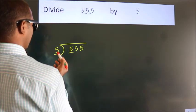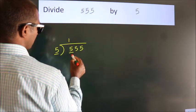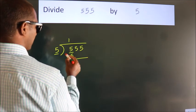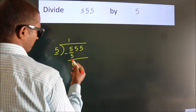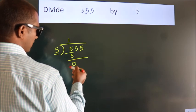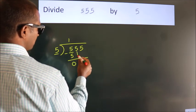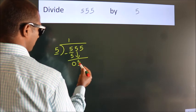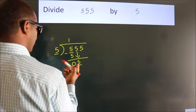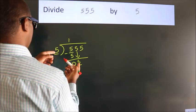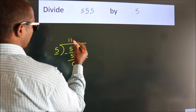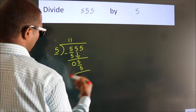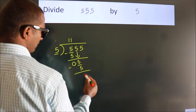Five once is five. We subtract and get zero. Then we bring down the next digit: 5. Again, when do we get 5 in the five times table? Five once is five. We subtract and get zero. Bring down the next digit: 5.